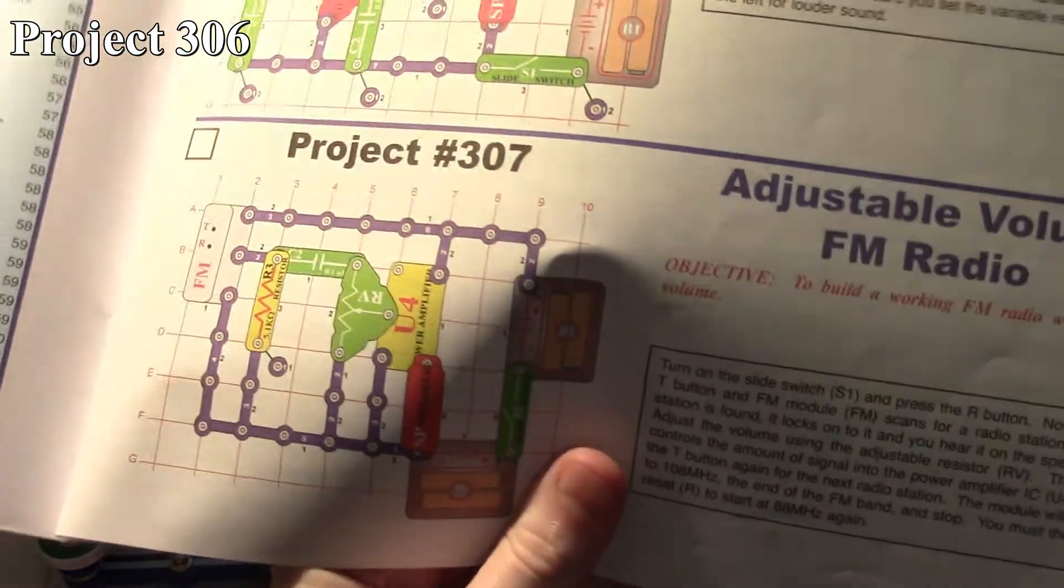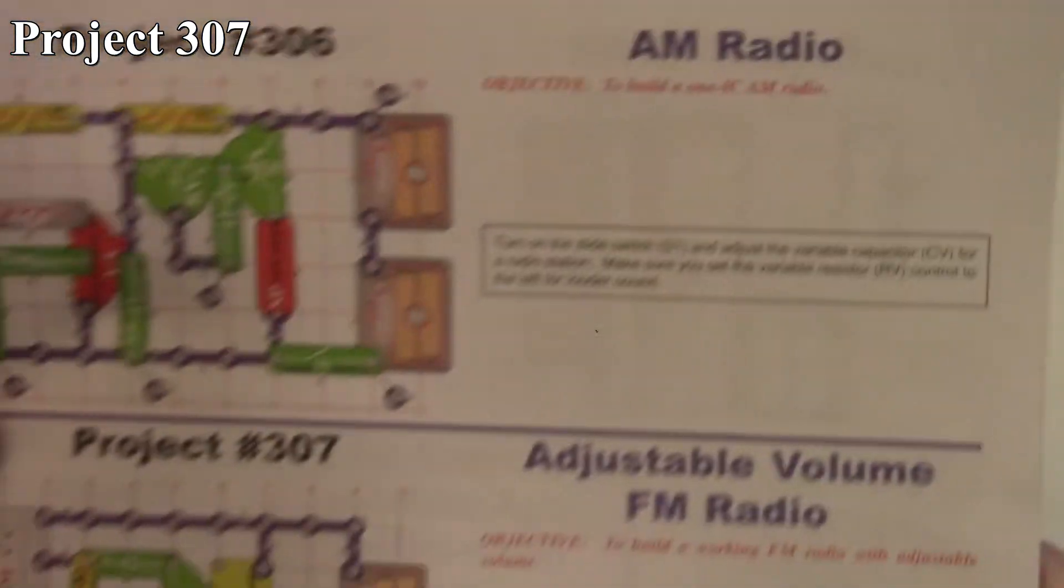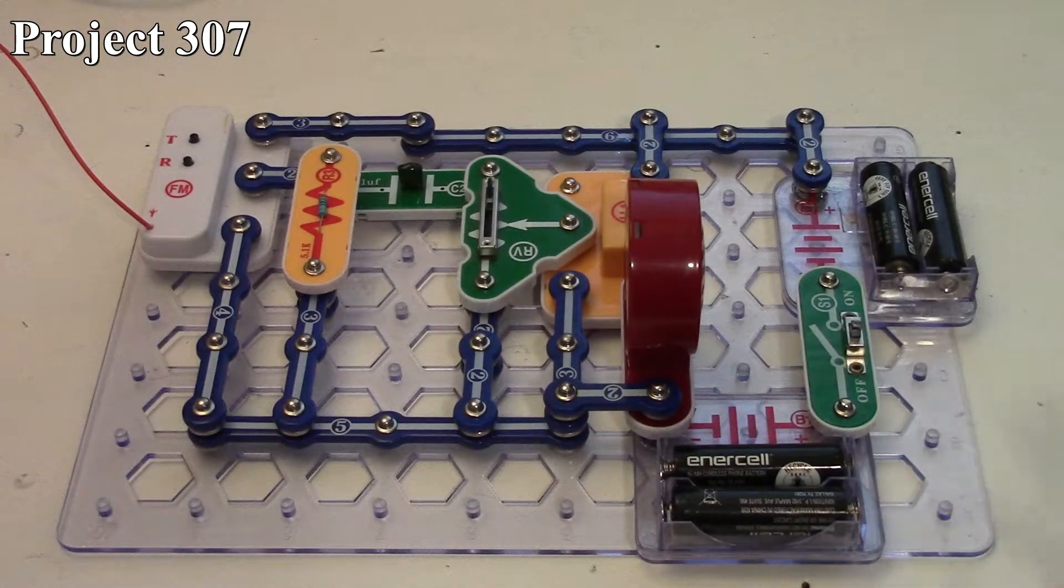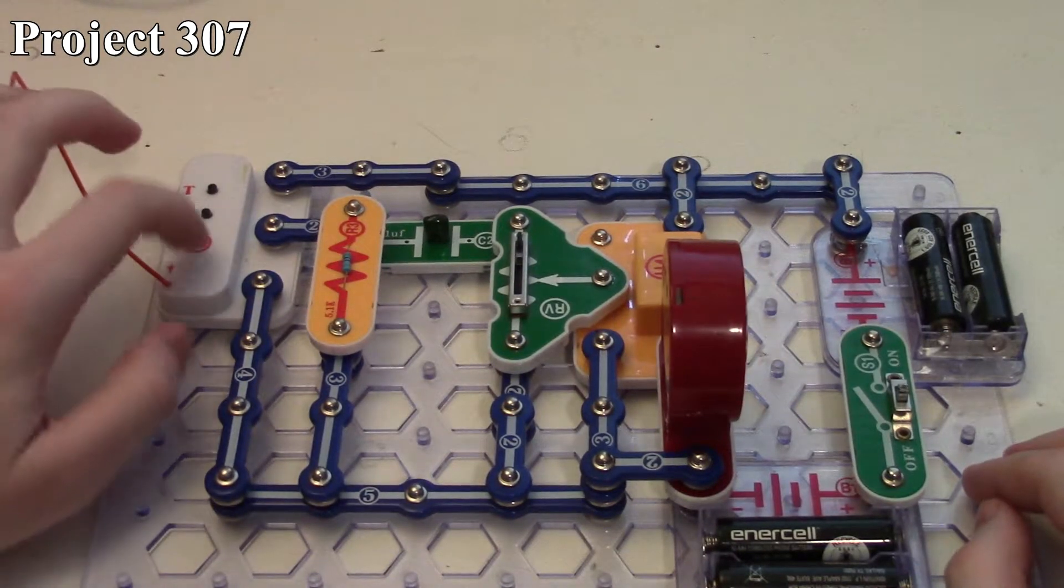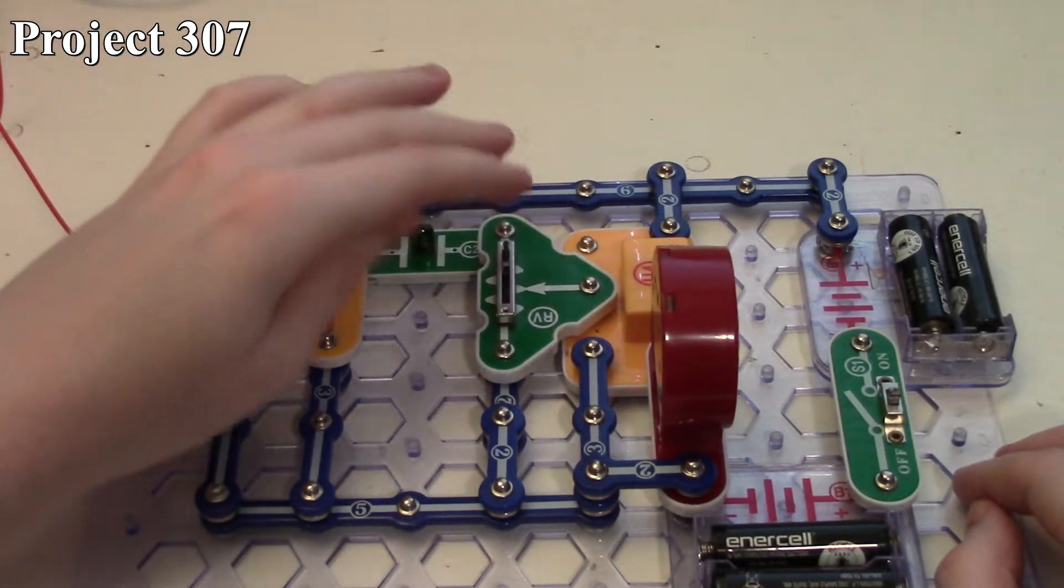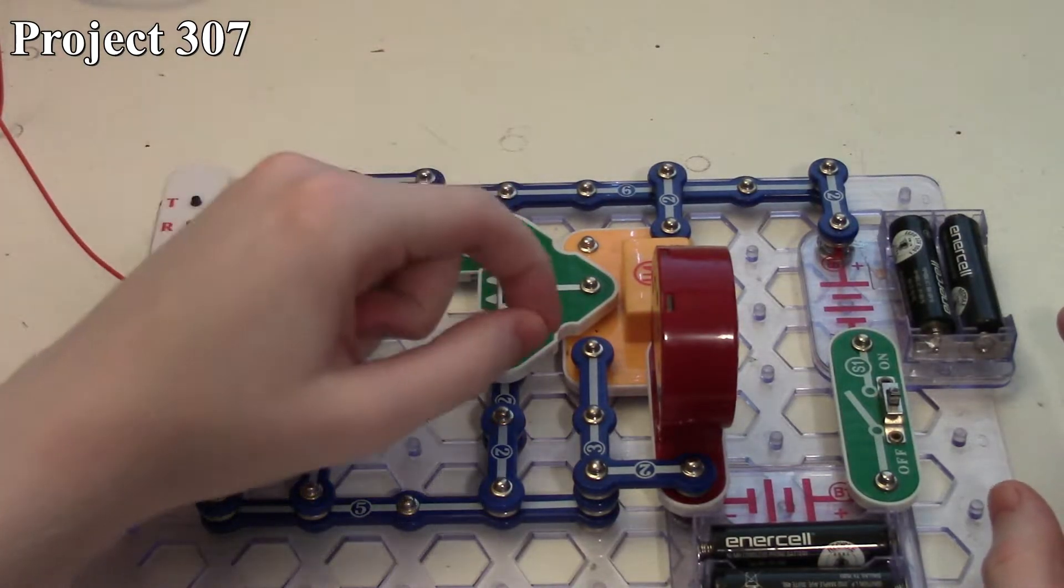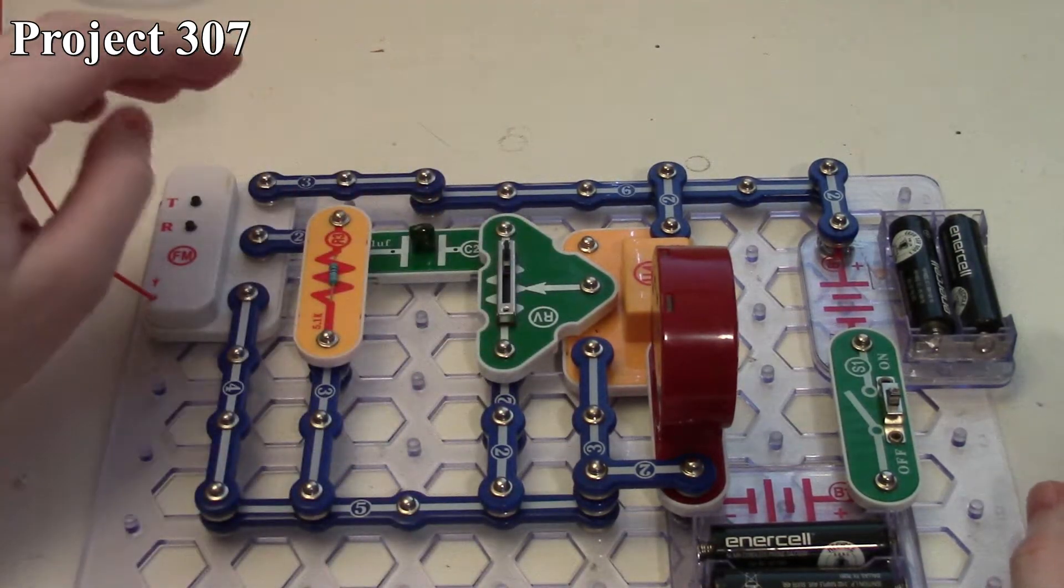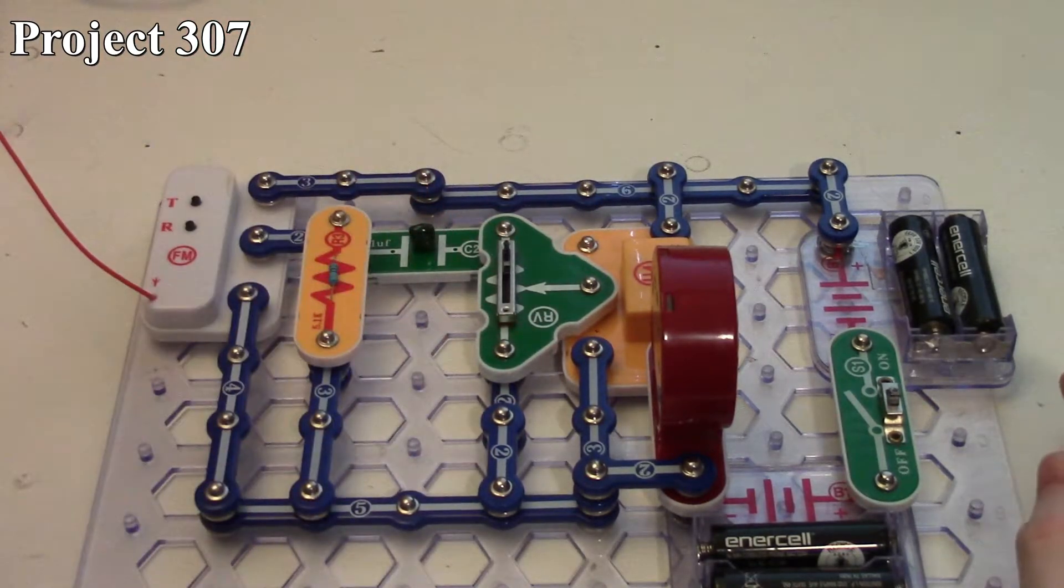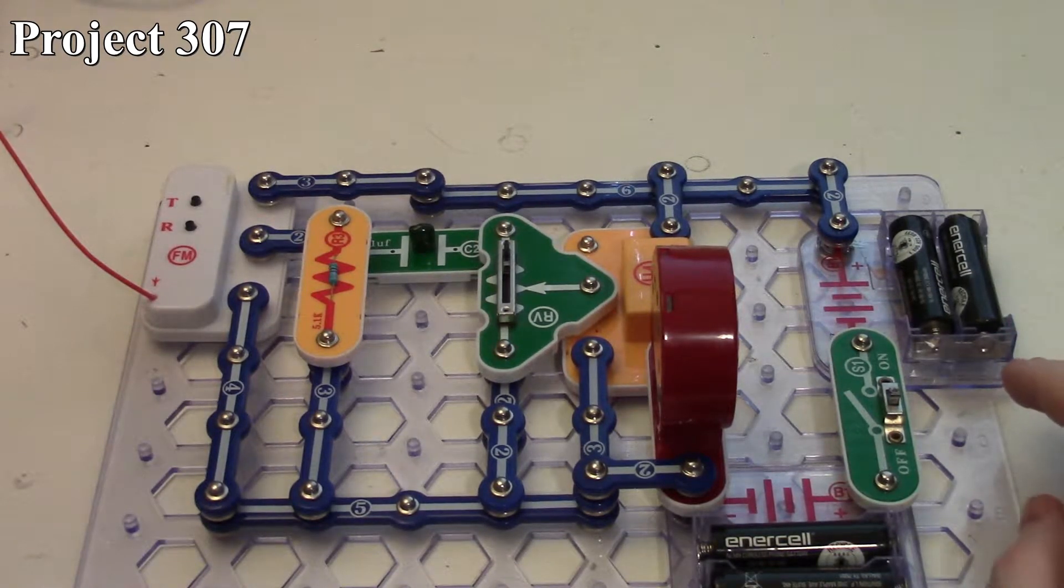Now we're looking at project 307, the adjustable volume FM radio. We're making use of our FM radio integrated circuit with a little antenna whip that feeds through our variable resistor into the input of our power amplifier, which then goes out to our speaker. Because it's running the power amplifier, it will be louder than if we just ran it directly through the resistor.